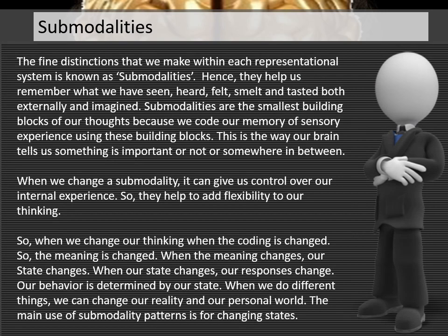Submodalities. The fine distinctions that we make within each representational system are known as submodalities. They help us remember what we have seen, heard, felt, smelled, and tasted — both externally and imagined. Submodalities are the smallest building blocks of our thoughts, because we code our memory of sensory experience using these building blocks. This is the way our brain tells us something is important, or not, or somewhere in between. When we change a submodality, it can give us control over our internal experience and add flexibility to our thinking.